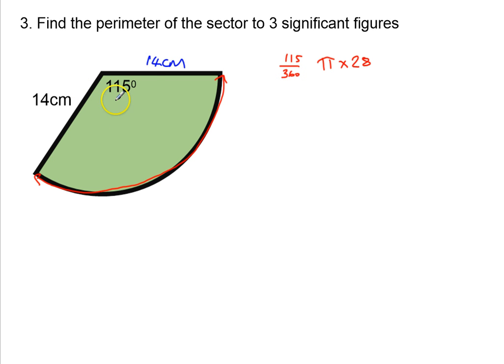So that's the fraction of the circle I've got: 360 degrees in a full circle, and I've only got 115 degrees. So I want to do 115/360ths of this pi times diameter. So I'm going to times it by pi times the diameter.